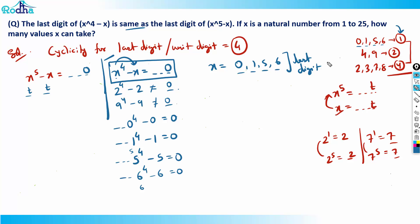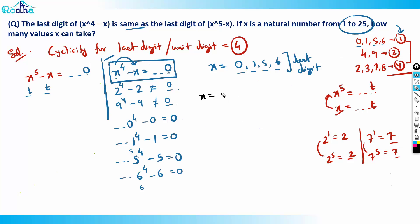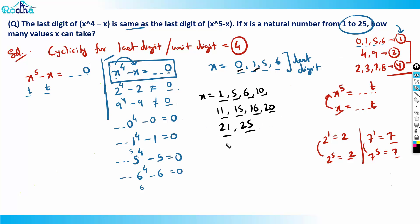Since x is a natural number from 1 to 25, the valid values are: ending in 1 → 1, 11, 21; ending in 5 → 5, 15, 25; ending in 6 → 6, 16; ending in 0 → 10, 20. That gives 3 + 3 + 2 + 2 = 10 values. So x can take 10 values. The answer is 10.